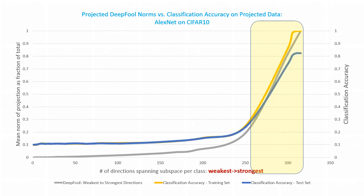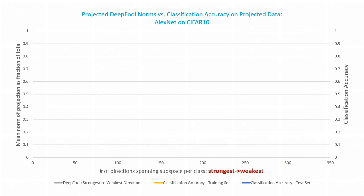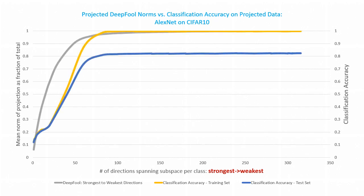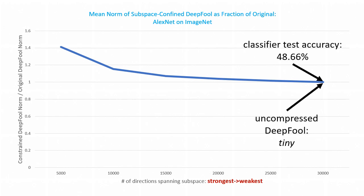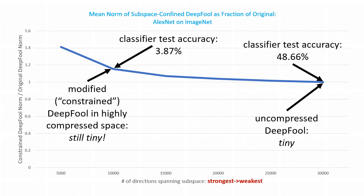Here's the train accuracy, and here's the test accuracy. If we reverse the ordering of the directions — strongest to weakest — we notice the same association between the adversarial directions and the directions used for classification. Some defense methods have suggested projecting away directions of the input data. This curve traces the mean norm of a DeepFool attack suitably confined to each subspace, relative to the norm of the original uncompressed DeepFool. Even with as few as 10,000 remaining ImageNet directions — at which point AlexNet is essentially unable to classify accurately at all — we are still able to fashion very effective low-norm attacks in the confined space. For all the details, read the paper, or come buy a poster.